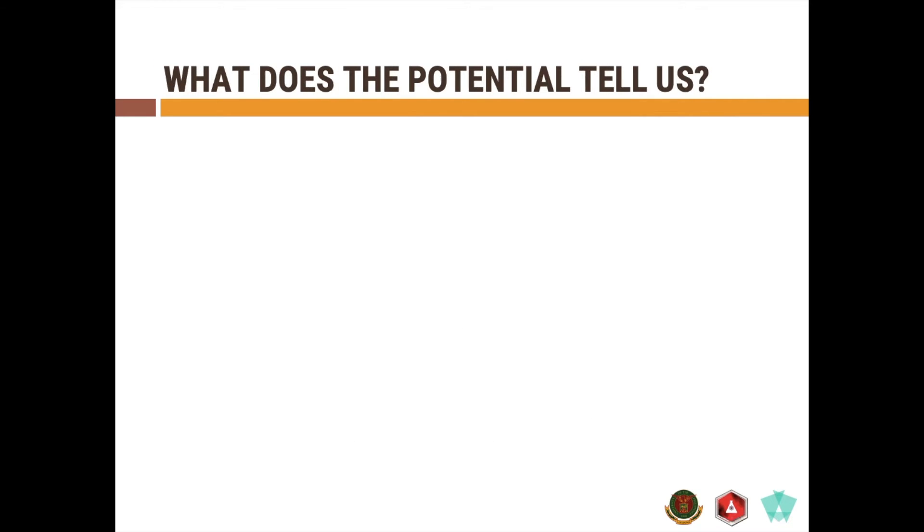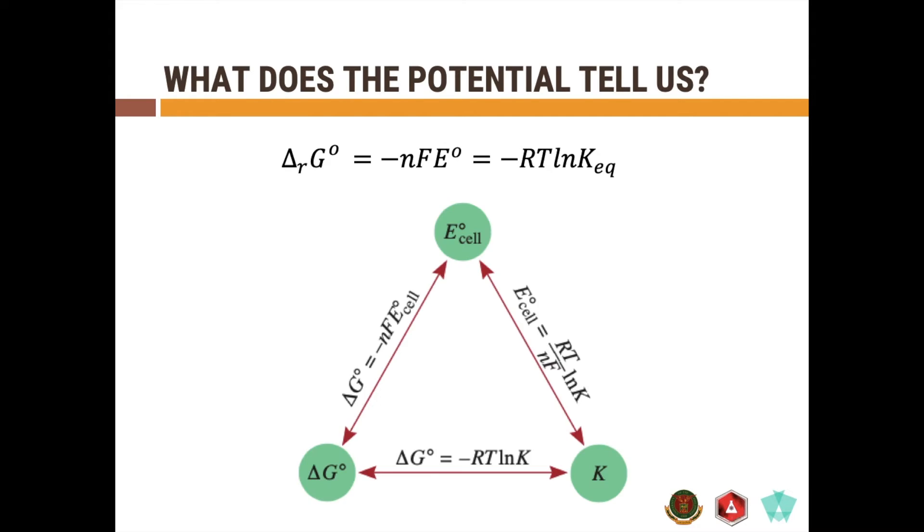So what does the potential tell us? You have here the formula ΔrG° = -nFE° = -RTlnKeq. So you can have some sort of correlation triangle which allows you to interconvert the Ecell to the delta G and to the Keq of the given cell reaction. And you have the formula written. So if you want to convert E°cell to delta G and vice versa, you use this one, ΔG° = -nFEcell.